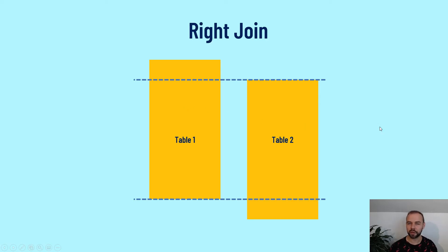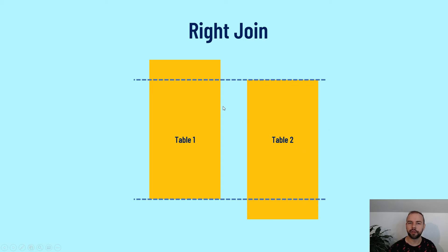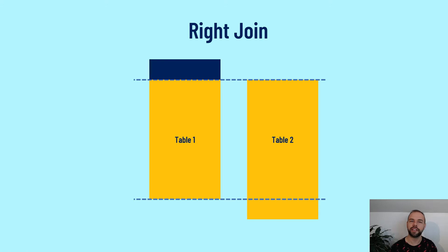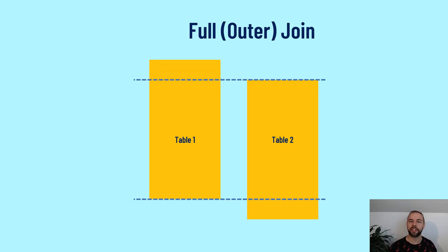The next type of join is a right join. The right join works very similarly to the left join in that it keeps all of the records from the right table and drops any records that don't have corresponding values in the left table. So when you complete a right join, the records in table one that don't have corresponding values in table two get dropped.